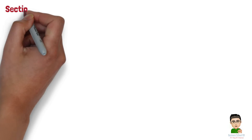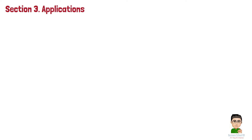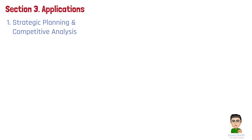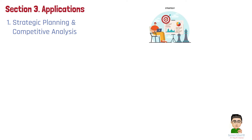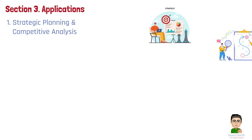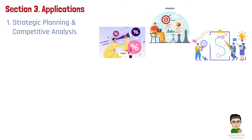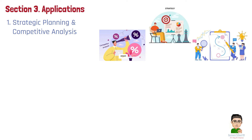Section 3: Applications. Data analytics can be applied in management from several key perspectives. Number 1: Strategic planning and competitive analysis. Data analytics helps managers monitor industry trends and competitor performance, enabling informed strategic decisions like market entry or product development. This allows businesses to anticipate market changes and maintain a competitive edge. For example, Amazon uses data analytics to analyze market trends and competitor strategies, enabling informed decisions on pricing, product offerings, and market expansion, maintaining its e-commerce dominance.